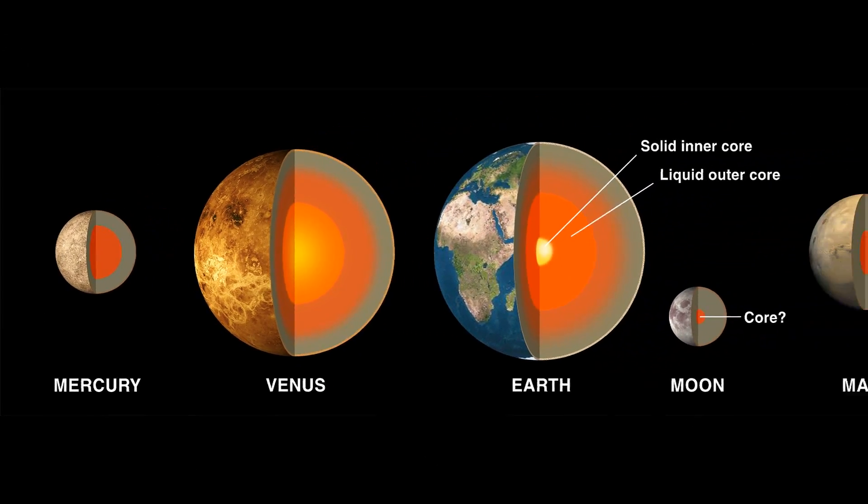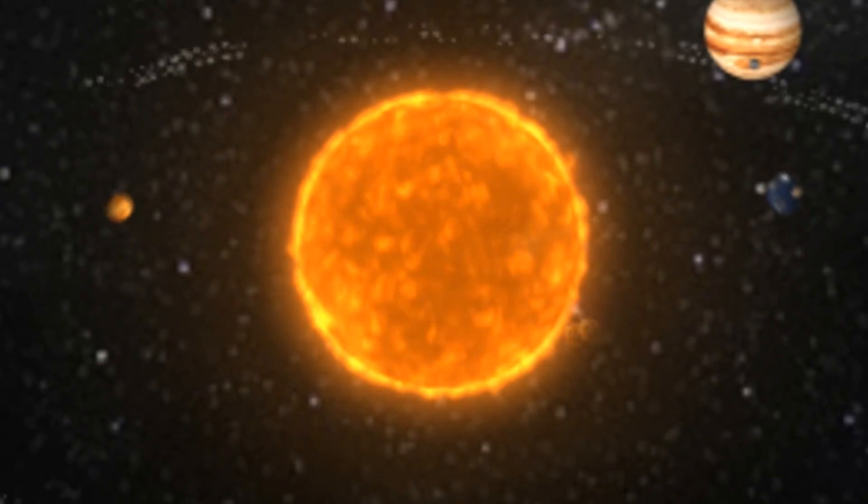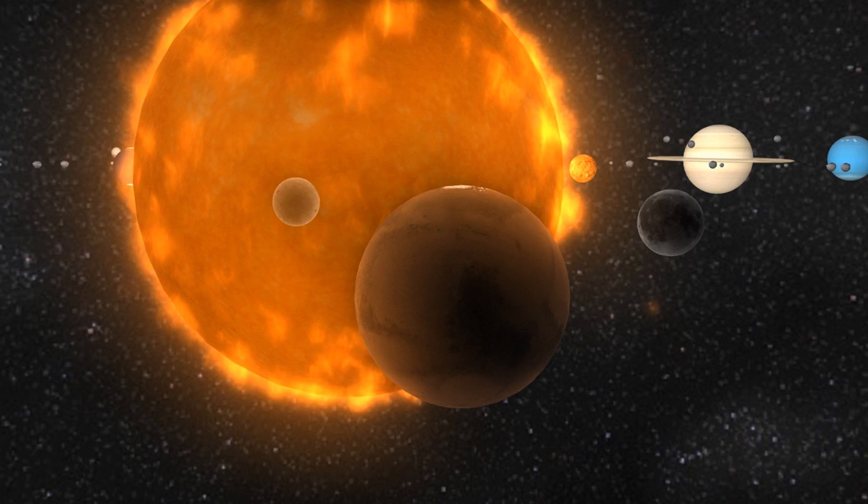Terrestrial planets are small, rocky planets that happen to be close to the sun. There are four of these types, and they are Mercury, Venus, Earth, and Mars.